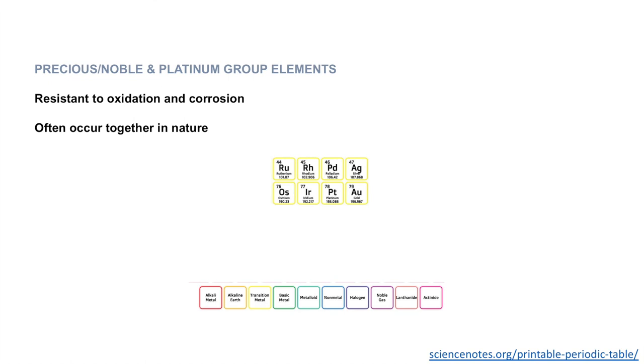Lastly, an interesting one is the precious noble metals, and if we just take out gold and silver, the two in the right column from that equation, we have what's referred to as the platinum group elements. These are all precious metals that are quite rare in nature and they often occur together in nature due to their similar properties. These elements are particularly resistant to oxidation and corrosion.